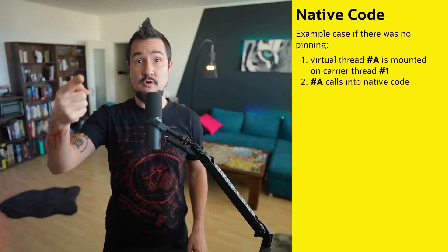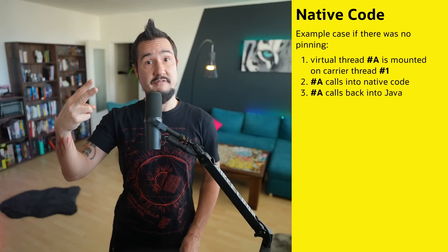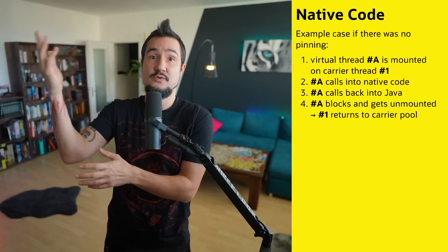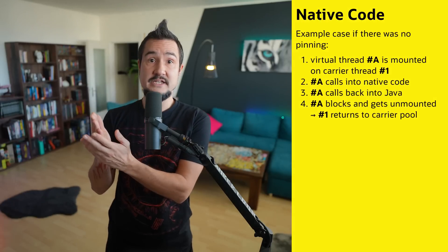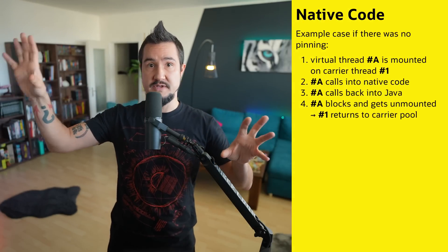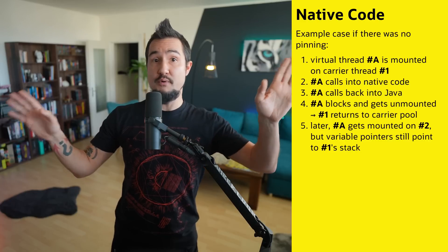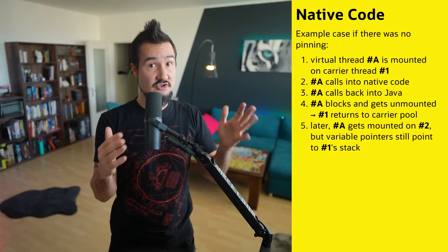Unfortunately, JDK 24 doesn't remove all pinning though. If you call native code via a C library, that code may contain pointers to native variables on the stack that it can read and write at any time. Stack variables belong to the thread, so it's important that native code sticks with the same thread. Otherwise, a virtual thread calls into native code, the native code calls back into Java, the Java code blocks the virtual thread, and then the runtime unmounts the virtual thread and copies its stack to the heap. That last step severs the connection between the native code and its variables on the stack, and unless the virtual thread is remounted onto the same carrier thread, the pointers all point to the wrong thread stack, leading to garbage reads and destructive writes.